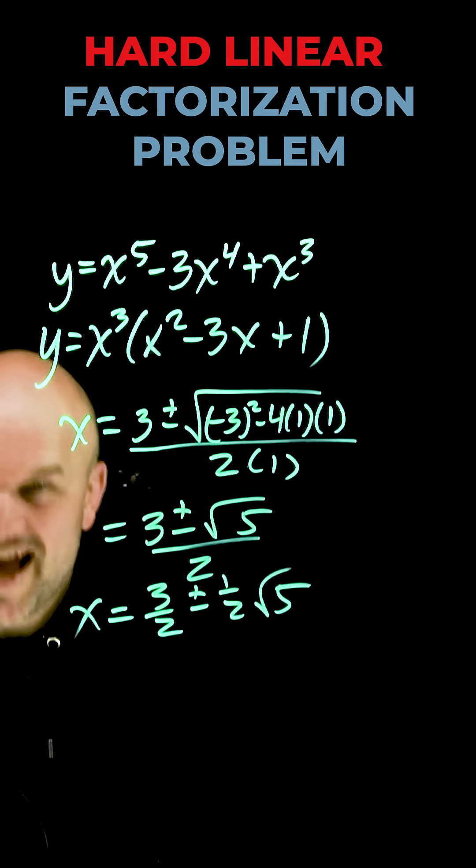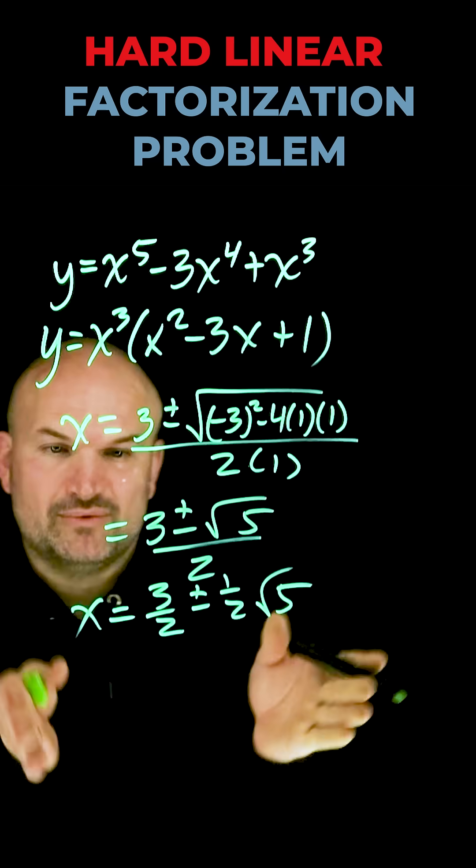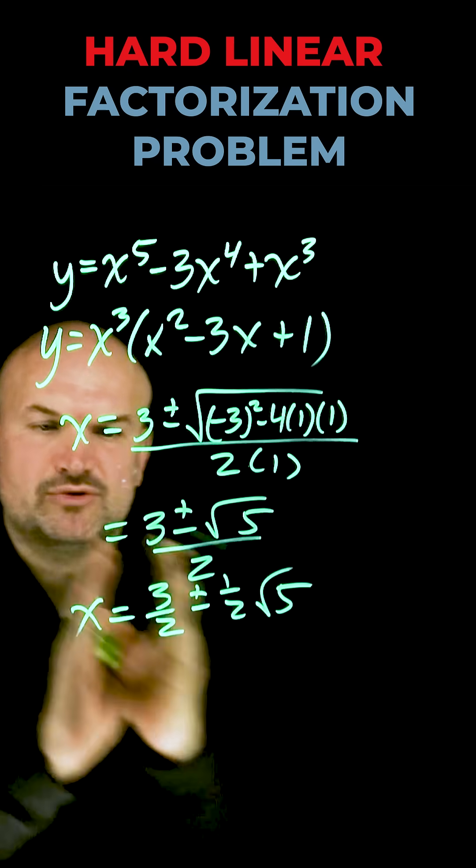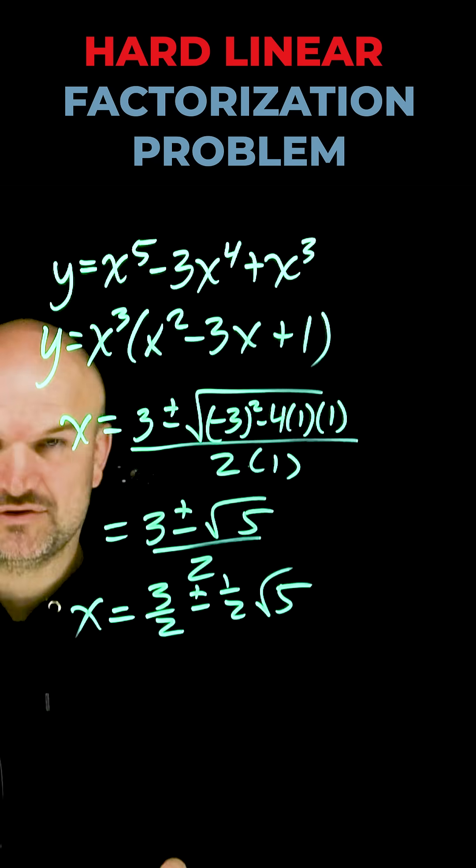All right, now that's equal to x, but ladies and gentlemen, if we need to rewrite this as factors, we need to subtract the 3 halves and then subtract 1 half square root of 5, subtract the 3 halves and add 1 half square root of 5.